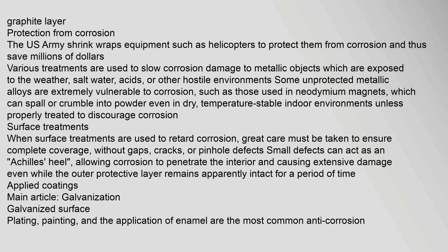Protection from corrosion. The US Army shrink wraps equipment such as helicopters to protect them from corrosion and thus save millions of dollars. Various treatments are used to slow corrosion damage to metallic objects exposed to the weather, salt water, acids, or other hostile environments. Some unprotected metallic alloys are extremely vulnerable to corrosion, such as those used in neodymium magnets, which can spall or crumble into powder even in dry, temperature-stable indoor environments unless properly treated. When surface treatments are used to retard corrosion, great care must be taken to ensure complete coverage without gaps, cracks, or pinhole defects. Small defects can act as an Achilles heel, allowing corrosion to penetrate the interior and causing extensive damage even while the outer protective layer remains apparently intact.